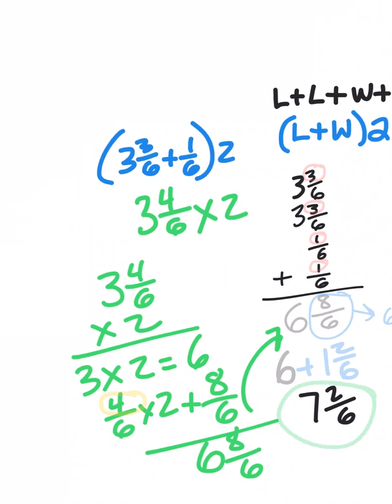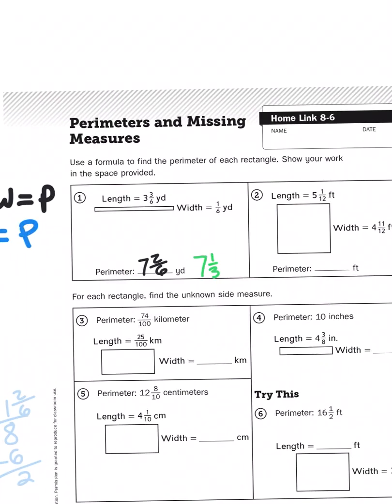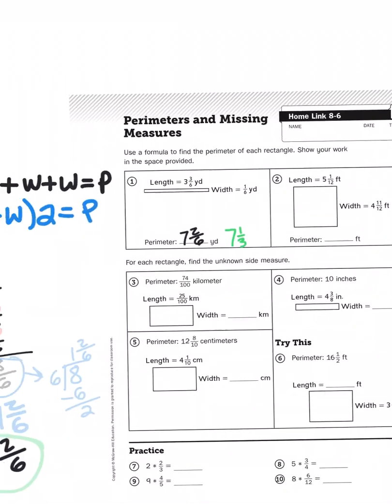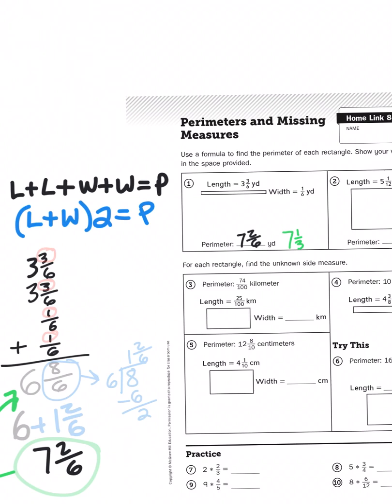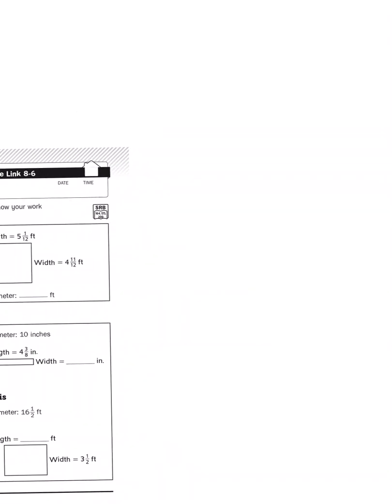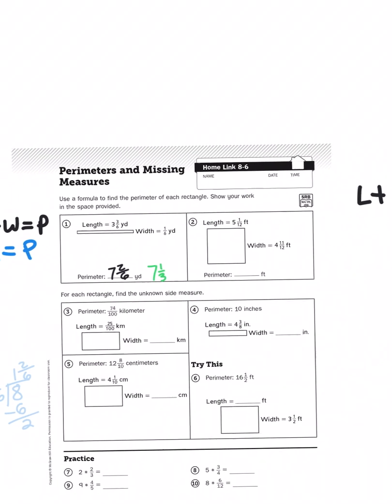So either strategy will work to get you your perimeter. But let's take a look at another problem, like problem number 3. You've been given the perimeter already, so instead of finding the perimeter, you're trying to find the missing measure of a side. We're provided with the length of this rectangle, which is 25 hundredths of a kilometer, and the entire perimeter is 74 hundredths of a kilometer. Applying my formula of length plus length plus width plus width equals perimeter, what I have to do is eliminate what I know to figure out what I don't know.